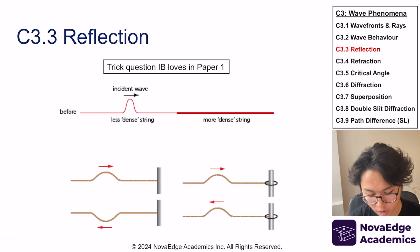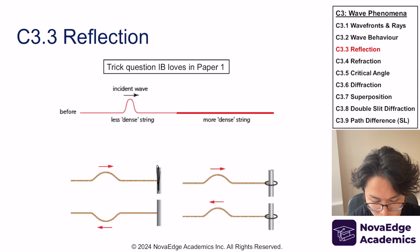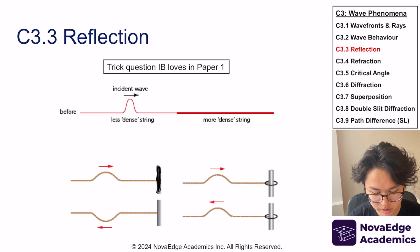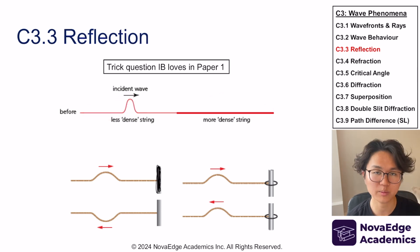So two completely different types of reflection that can happen depending on whether this is fixed or loose. Why am I saying this? Because there's a very popular trick question by the IB in Paper 1 multiple choice where they ask you, like less dense to more dense string, how does it reflect? In this case you're going from less to more dense, and so more dense string replicates what a concrete heavy wall would do. But if I go from a more dense string into a less dense string, then it just whips it back. Very popular trick question.